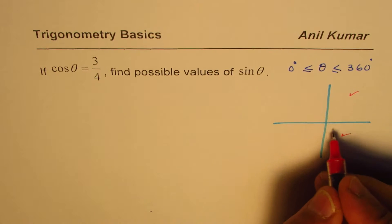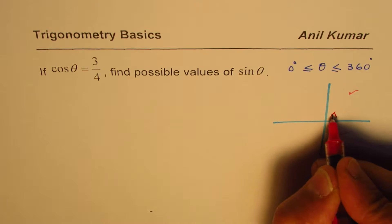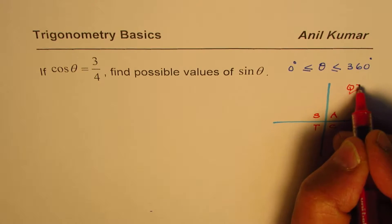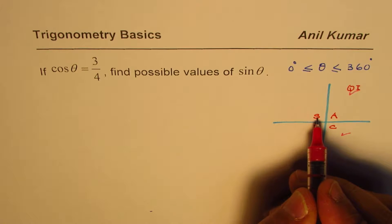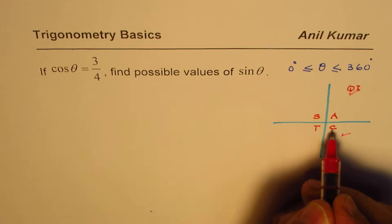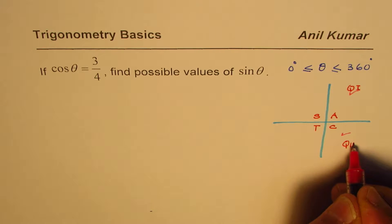Some of you can use the CAST rule, which means that all are positive in quadrant 1. Sine is positive in quadrant 2, tan in 3, cosine in quadrant 4. So I mean quadrant 4.